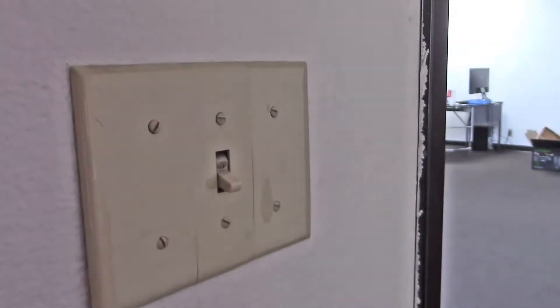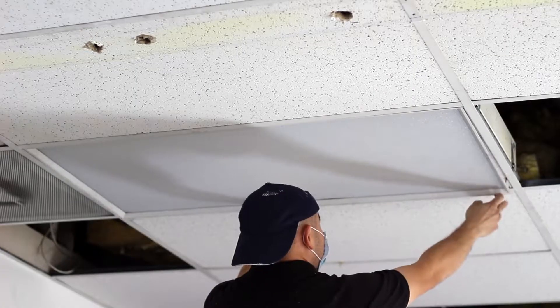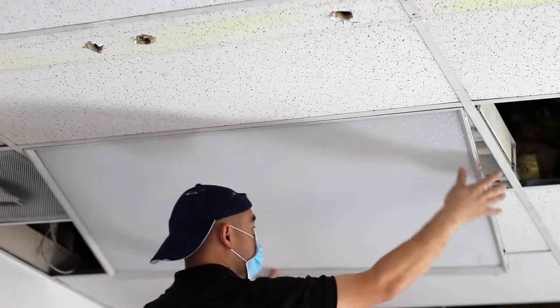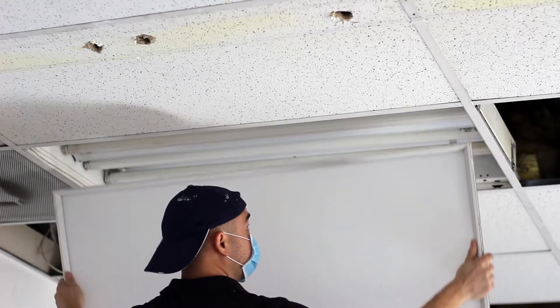Before you begin, make sure you shut off the power to the fixture. Remove the flat panel lens, ballast cover, and tube lights from the fixture.